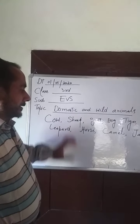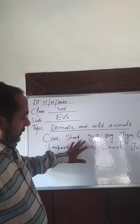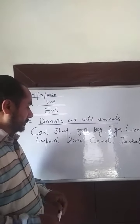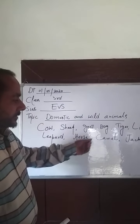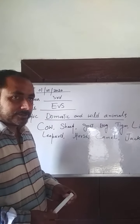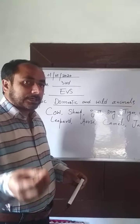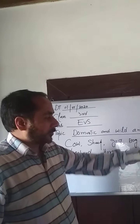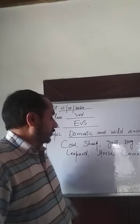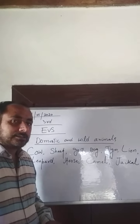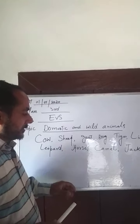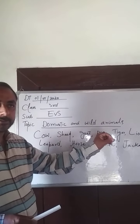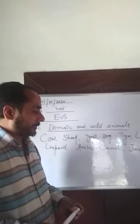There is a difference. Cow, sheep, goat, dog, horse, camel — these animals we see in our homes. We rear them; they are found in our homes everywhere. But there is another group of animals like tiger, lion, fox, leopard — these are not found in our homes. We see these animals either in jungle and forest areas or in zoos.